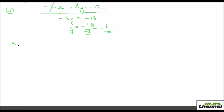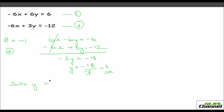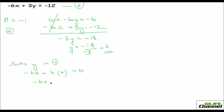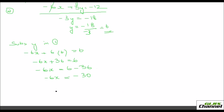Substitute y equals 6 into the first equation. We get minus 6x plus 6 times 6 equals 6, so minus 6x plus 36 equals 6. Taking 36 to the other side: minus 6x equals minus 30, so x equals minus 30 over minus 6, which is 5.